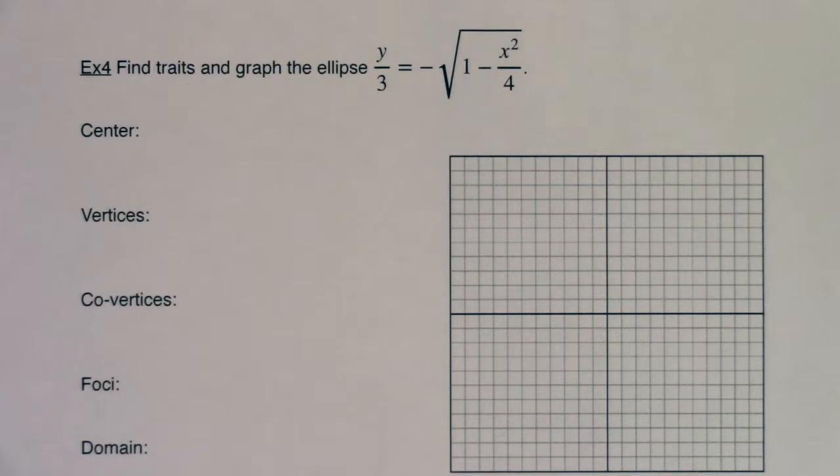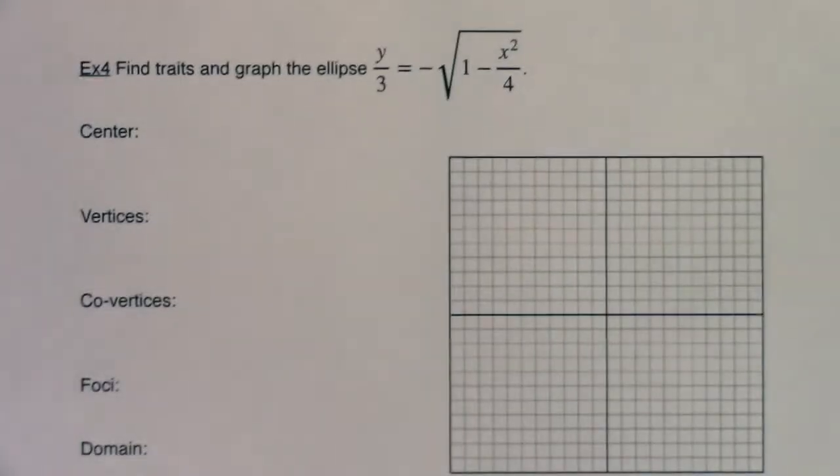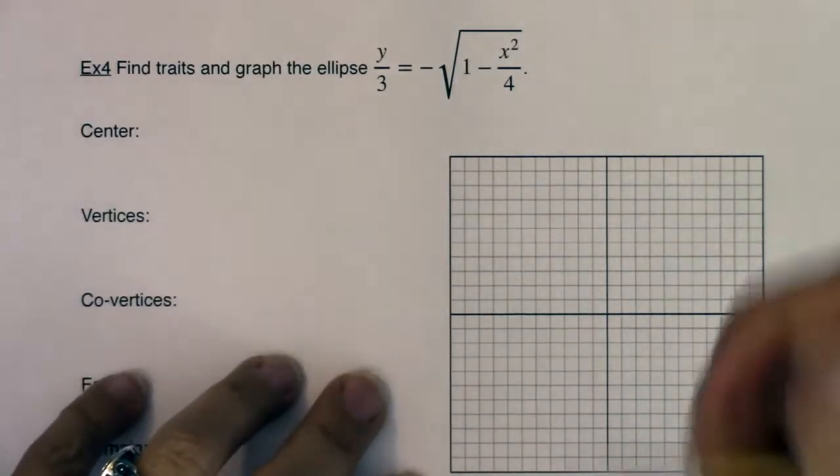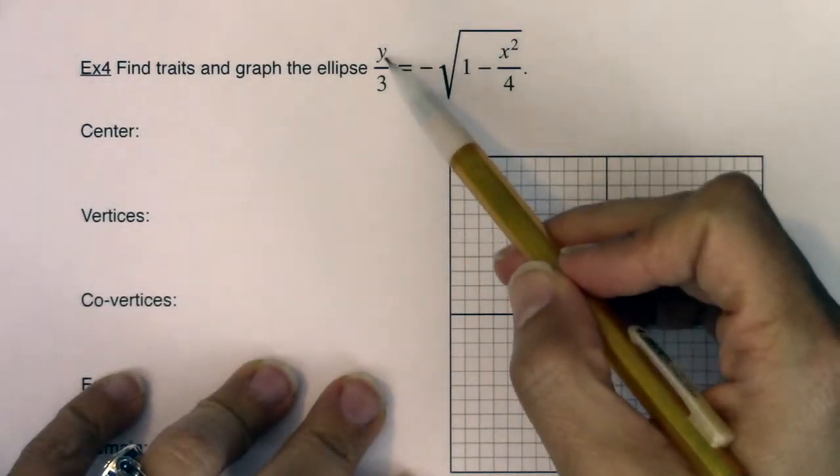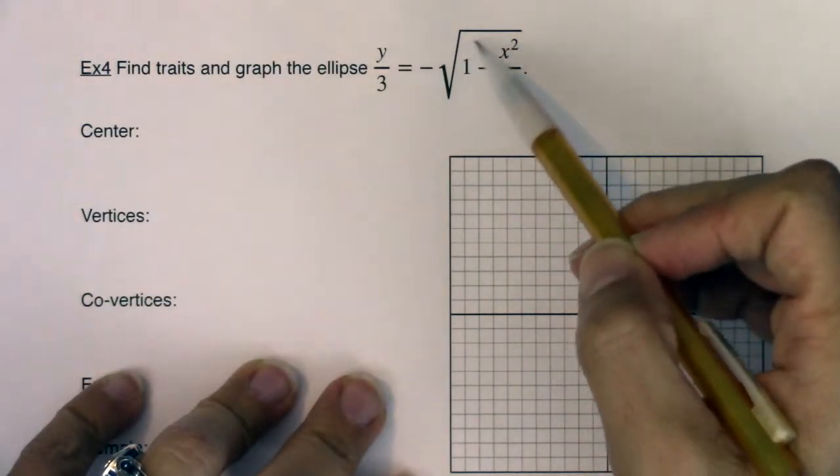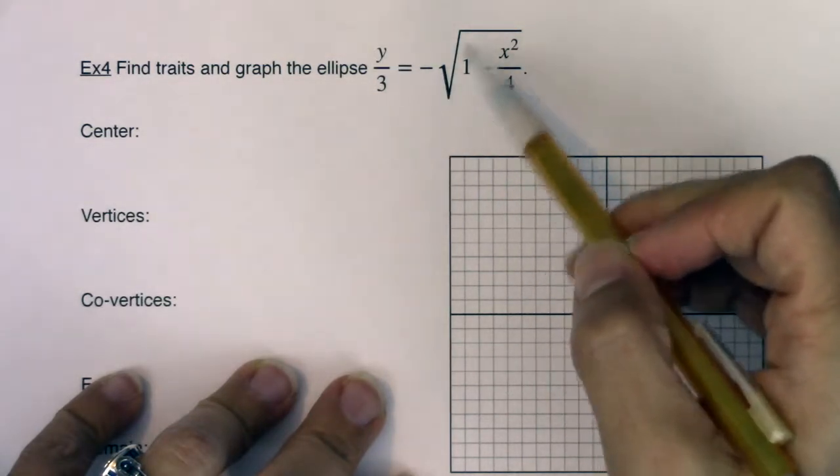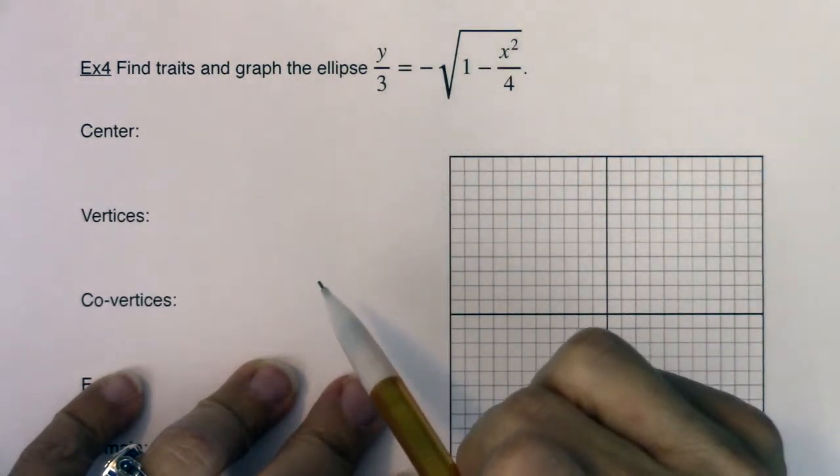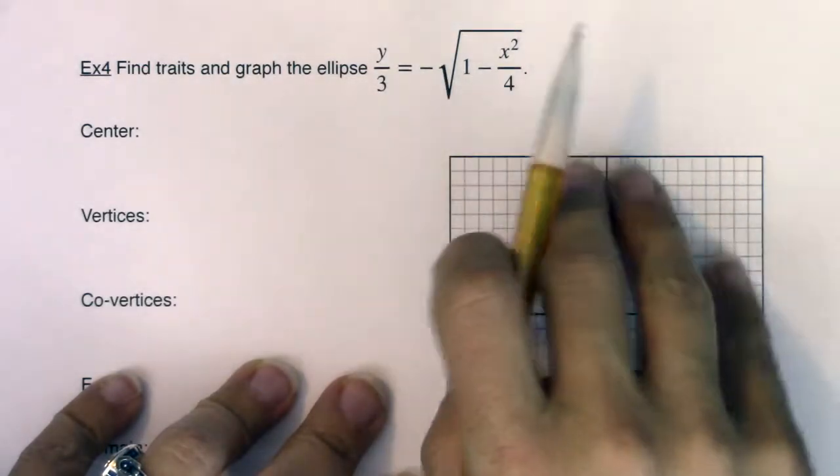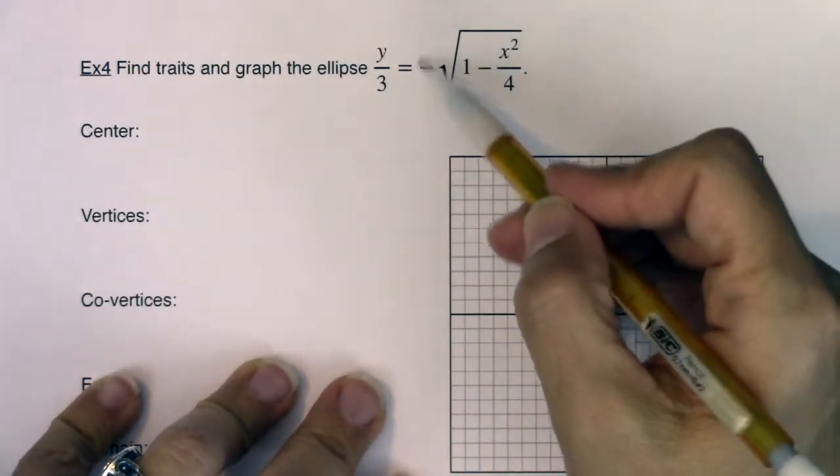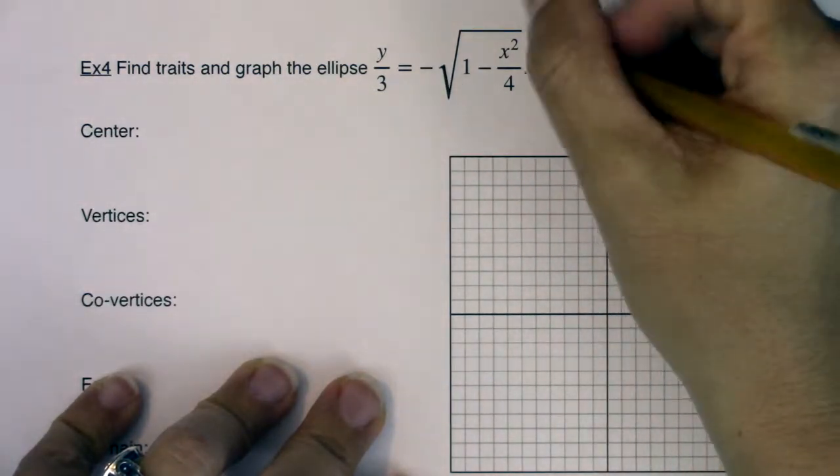Hey Math31, welcome to example 4. We're going to find some traits and graph yet another ellipse. But I made this equation look pretty funky very intentionally. I wanted to mess with us. So you see here that I've now got a square root hanging out here. I've got y over 3 is equal to negative square root 1 minus x squared over 4. So let's manipulate this and get this into standard form and then I'm going to talk about what this negative is doing in terms of our graph.